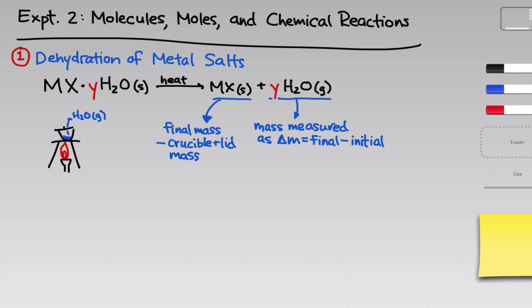This delta M value will be negative, and of course the actual mass of water lost is just the absolute value of this or the positive value that corresponds.